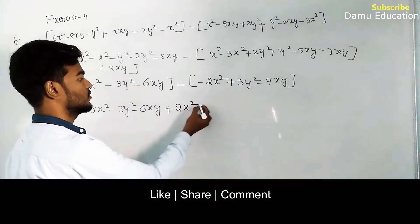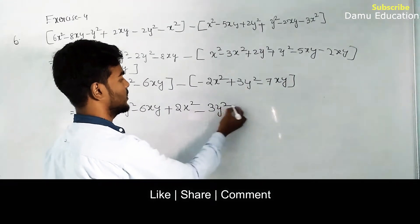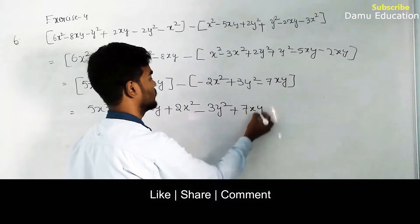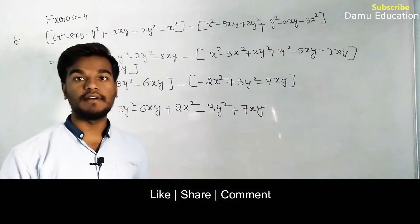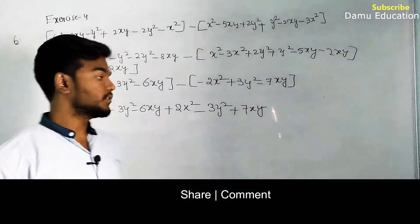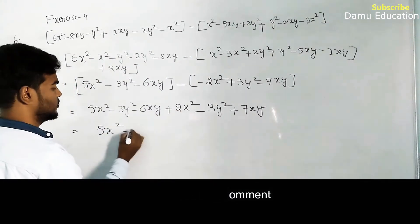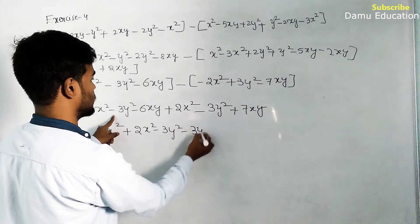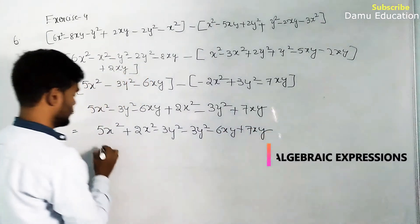Now we perform the subtraction. We apply the sign changes: minus x² becomes plus, minus 3y² with minus into minus becomes plus 3y², and minus 7xy with sign change becomes plus 7xy. Then we simplify by collecting all like terms: 5x² plus 2x², minus 3y² minus 3y², and minus 6xy plus 7xy.